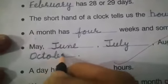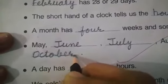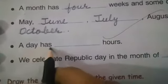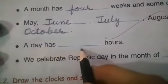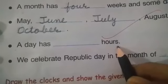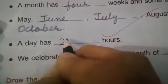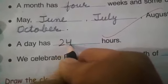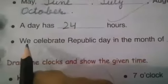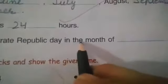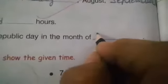October. A day has how many hours? A day has 24 hours. We celebrate Republic Day in the month of January.